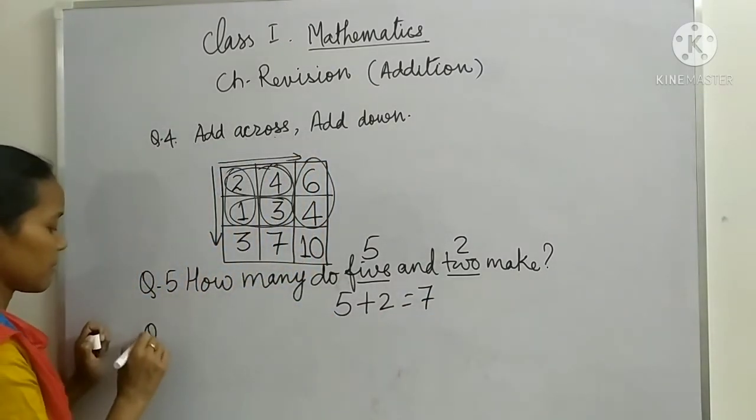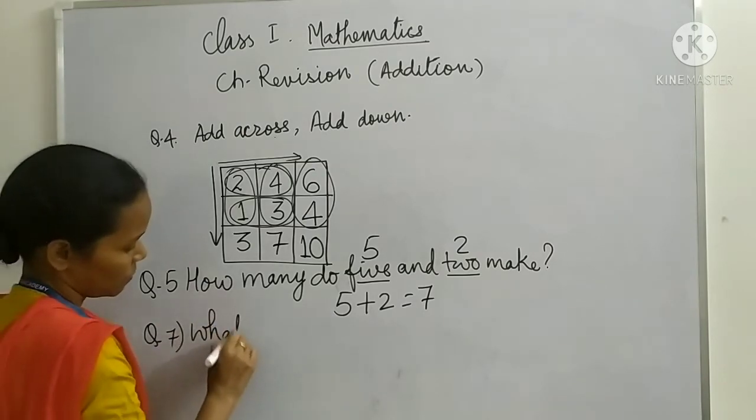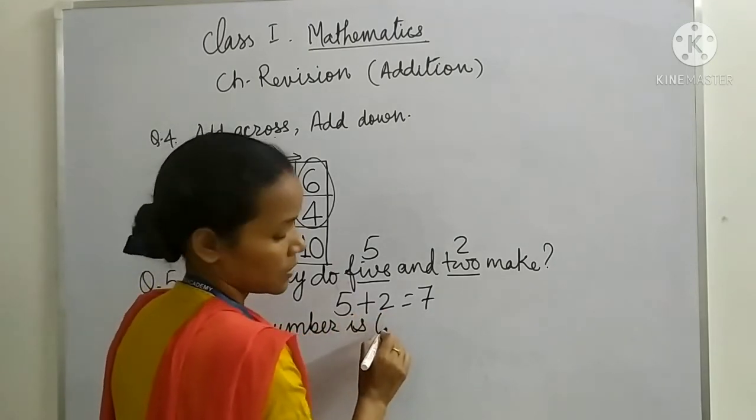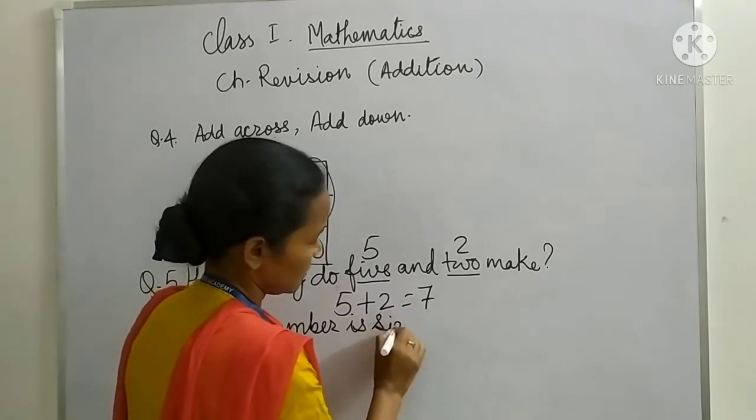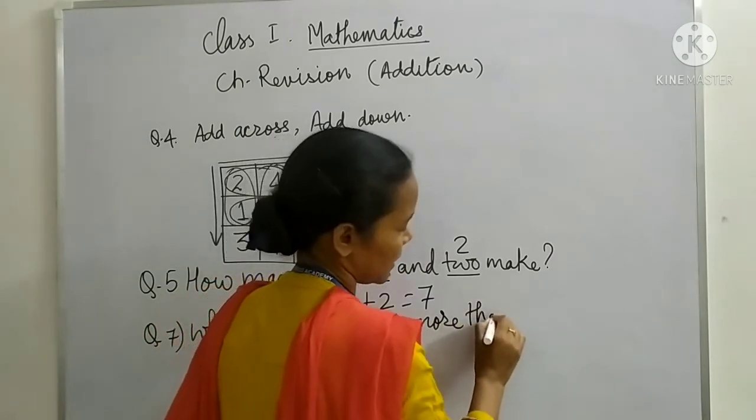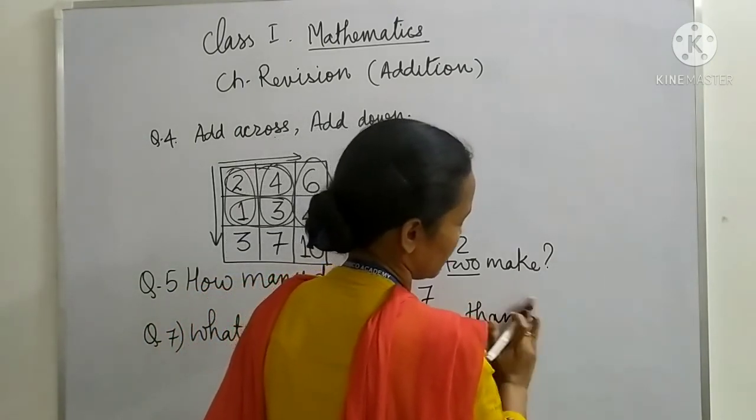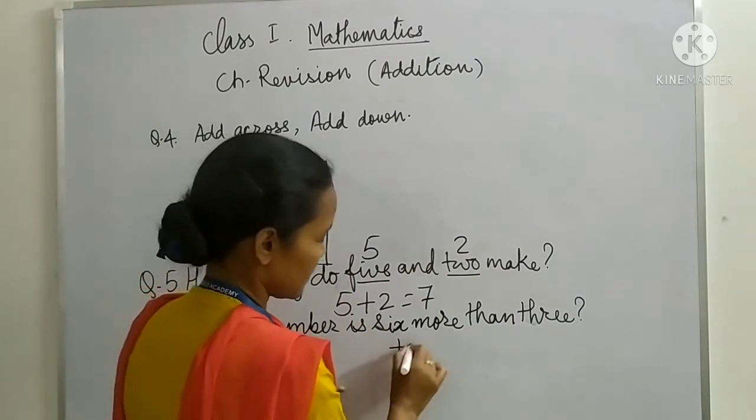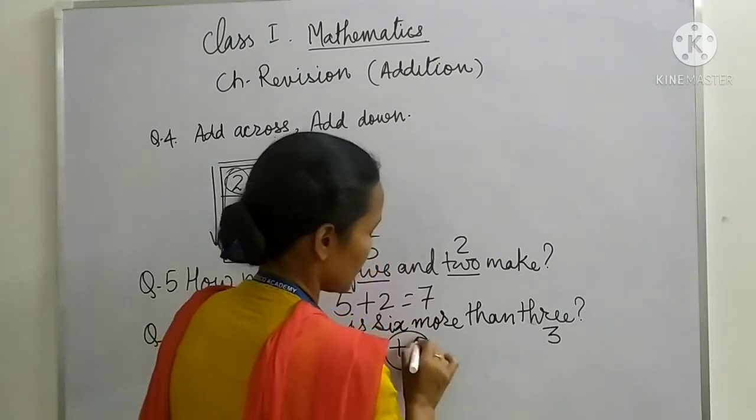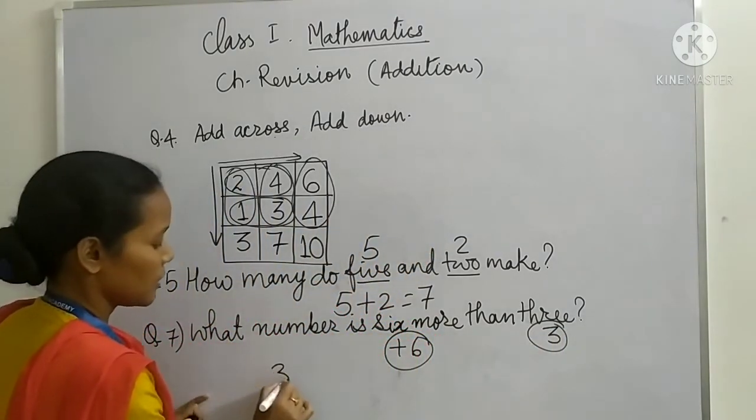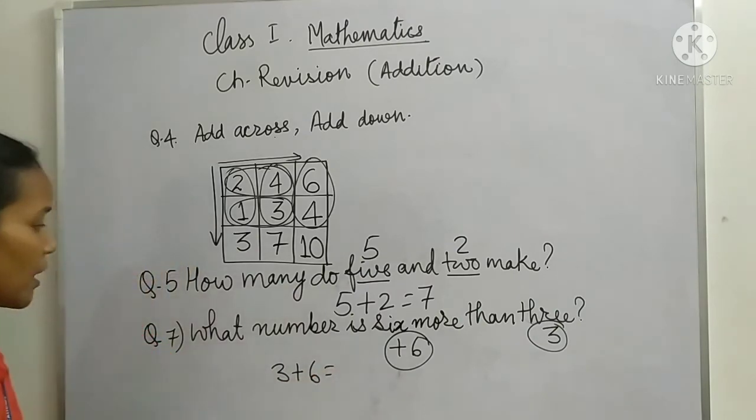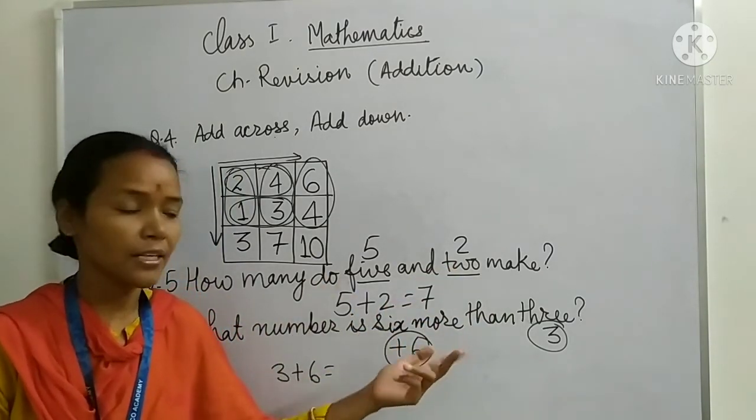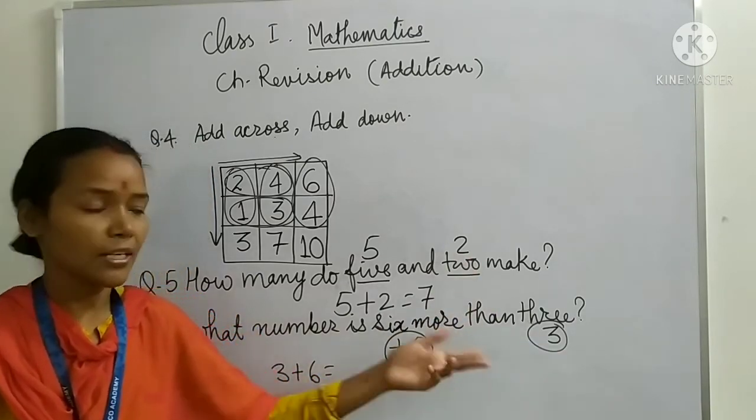Now question number 7. What number is 6 more than 3? So inverse. 6 more means plus 6 than 3. So 3 plus 6 is how much? The question is asking what number is 6 more than 3? 3 say 6 jada. 6 more means plus 6. 6 jada. 3 say 6 jada.